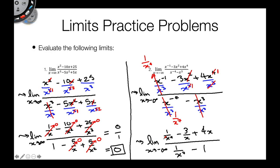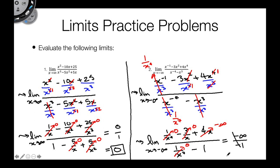Now we can take our limit. 1 over x to the 4th goes to 0, 3 over x goes to 0, and 1 over x to the 7th goes to 0. As we go to negative infinity, 4x also goes to negative infinity — 4 times a large negative number is still a very large negative number. So this goes to negative infinity divided by negative 1. The negative signs cancel, leaving positive infinity.